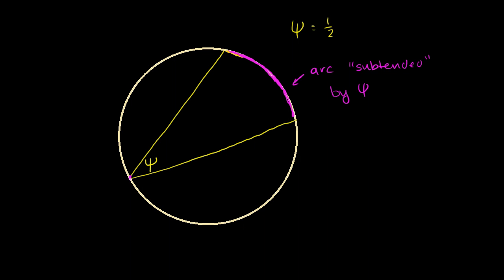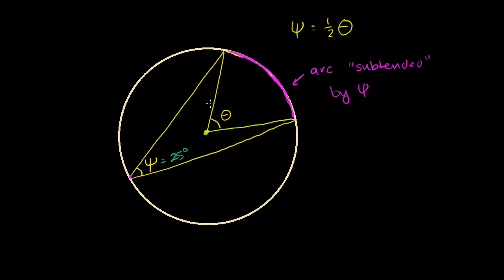A central angle is an angle where the vertex is sitting at the center of the circle. So let me draw a central angle that subtends this same arc. Let's call this theta. This angle is psi, this angle right here is theta. What I'm going to prove is that psi is always equal to one half of theta. So if psi equals 25 degrees, then theta must equal 50 degrees. Or if theta is 80 degrees, then psi is 40 degrees.